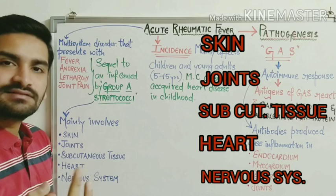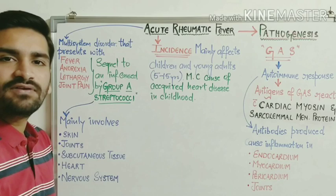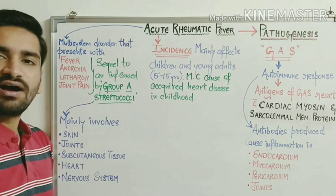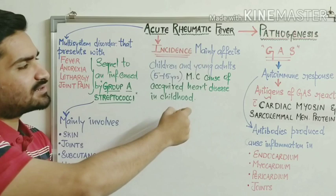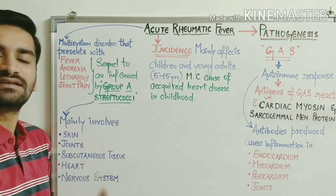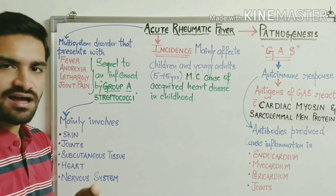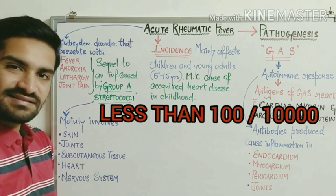Regarding incidence, acute rheumatic fever mainly affects children and young adults in the age group of 5 to 15 years. It is considered the most common cause of acquired heart disease in children and adolescents. The disease remains endemic in parts of Asia, America, and South Africa, with cases less than 100 per 10,000 examined.